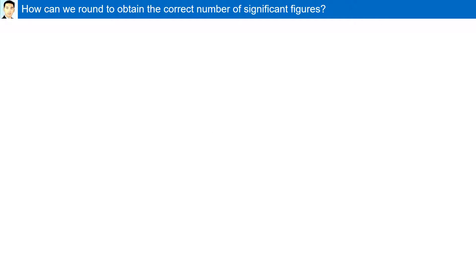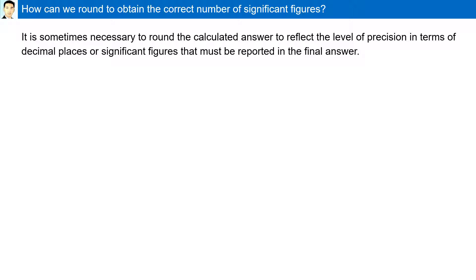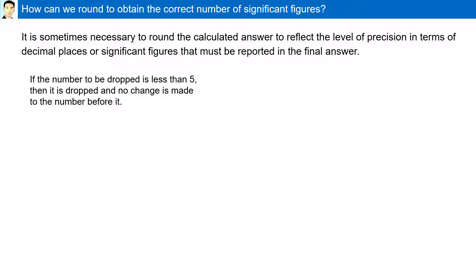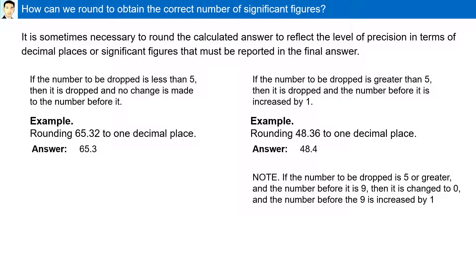How can we round to obtain the correct number of significant figures? It is sometimes necessary to round the calculated answer to reflect the level of precision in terms of decimal places or significant figures. If the number to be dropped is less than 5, it is dropped with no change to the number before it. If the number to be dropped is greater than 5, it is dropped and the number before it is increased by 1. If the number to be dropped is 5 or greater and the number before it is 9, it changes to 0 and the digit before it increases by 1. For example, 42.96 rounded to 1 decimal place: since 6 is 5 or greater, the 9 goes up by 1, becoming 0, and the digit before the 9 (which is 2) becomes 3, giving 43.0.